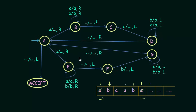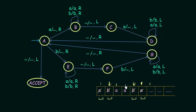We are back in state A, and the next symbol is B. In state A, if we get B, we replace it with a blank and move one step to the right. We come to state E and whether we get A or B, we keep moving to the right until we encounter a blank symbol. When we encounter the blank, we move one step to the left and we are in state F, where the rightmost symbol is B.